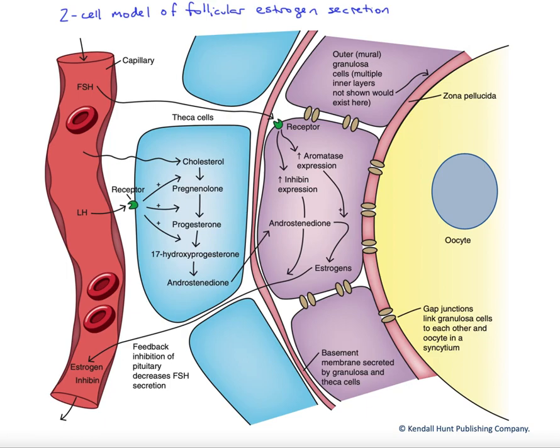Recall that folliculogenesis, full folliculogenesis from primordial follicles, takes nearly a year. We're jumping into the very end of a cycle here with antral secondary follicles that enter the ovarian or menstrual cycle to culminate in ovulation about 14 days into that cycle.